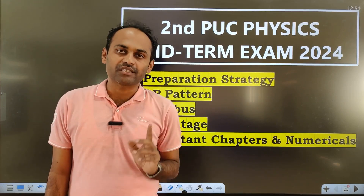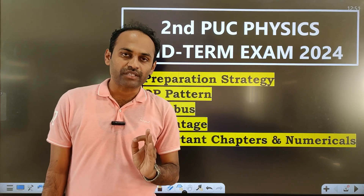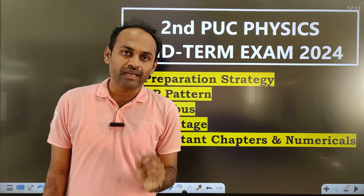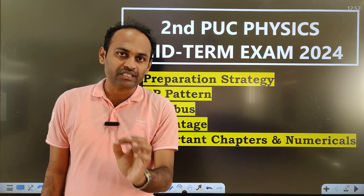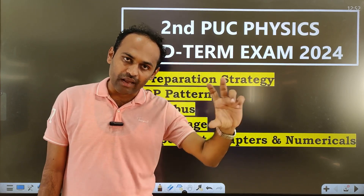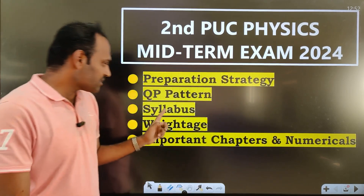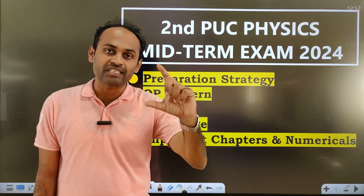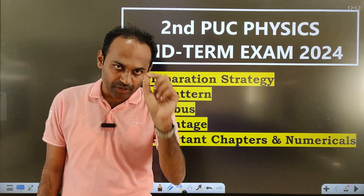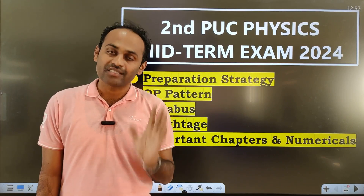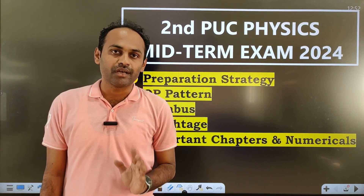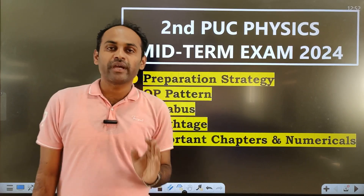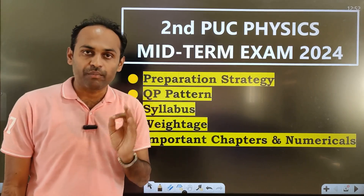In the annual exam, the question paper is 1 out of 5 marks. From part 1, you will get 66 to 73 marks. That is why the midterm exam syllabus is so important, and preparing for midterm exam and doing it successfully is very important.